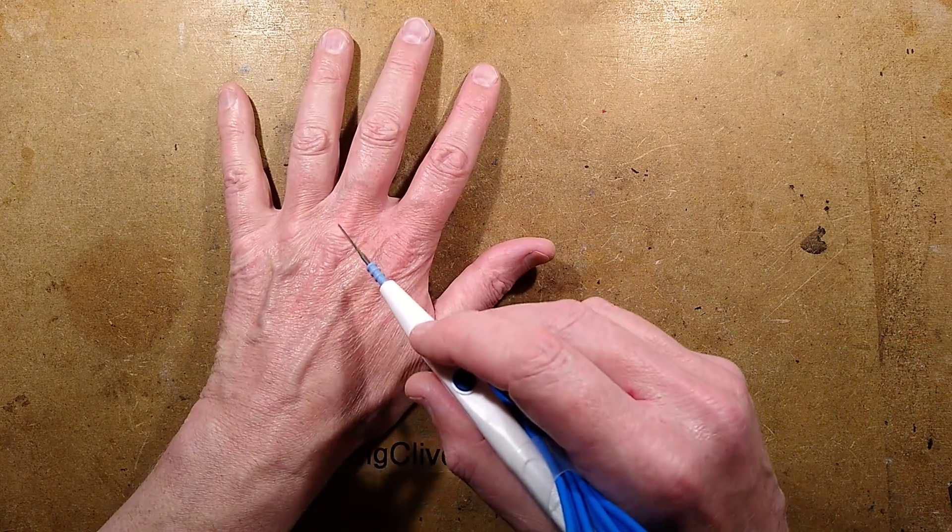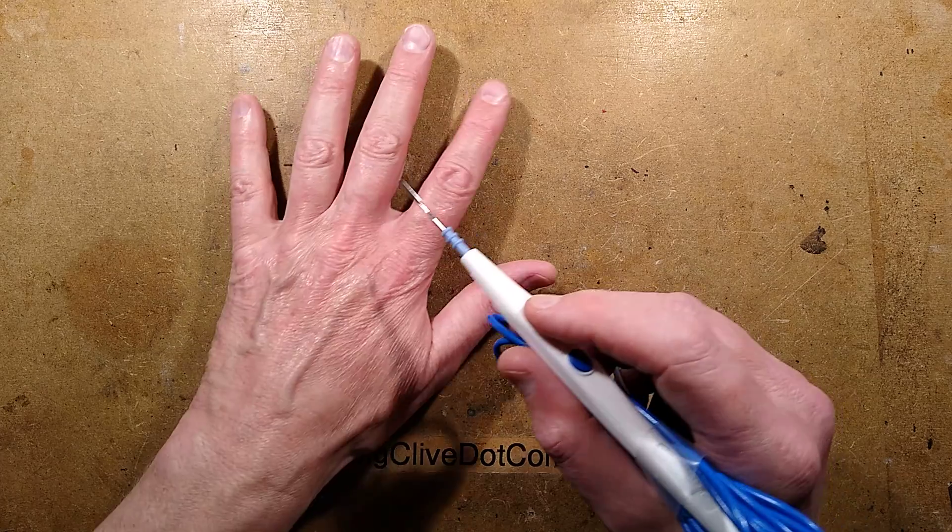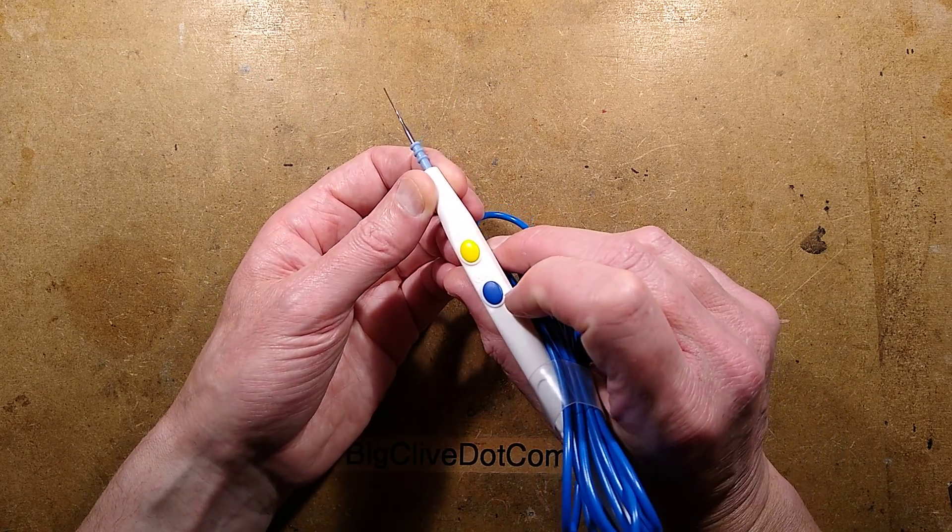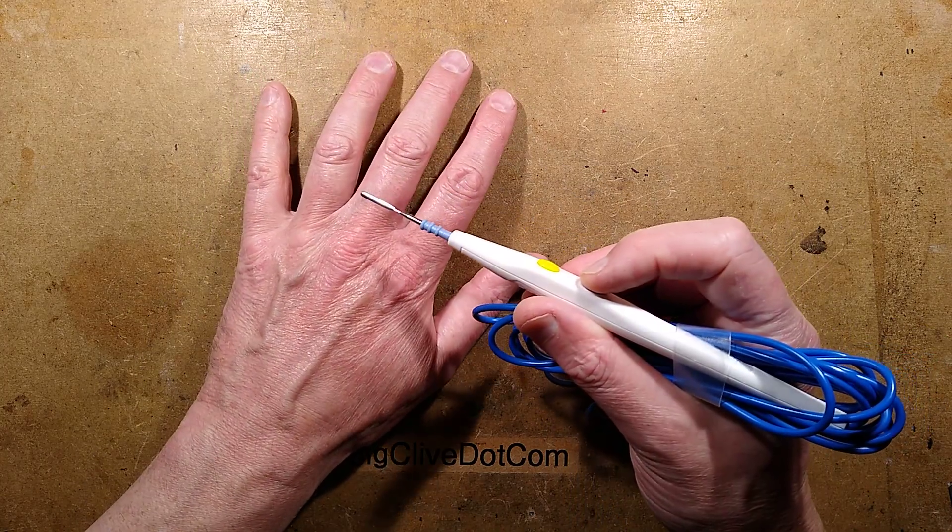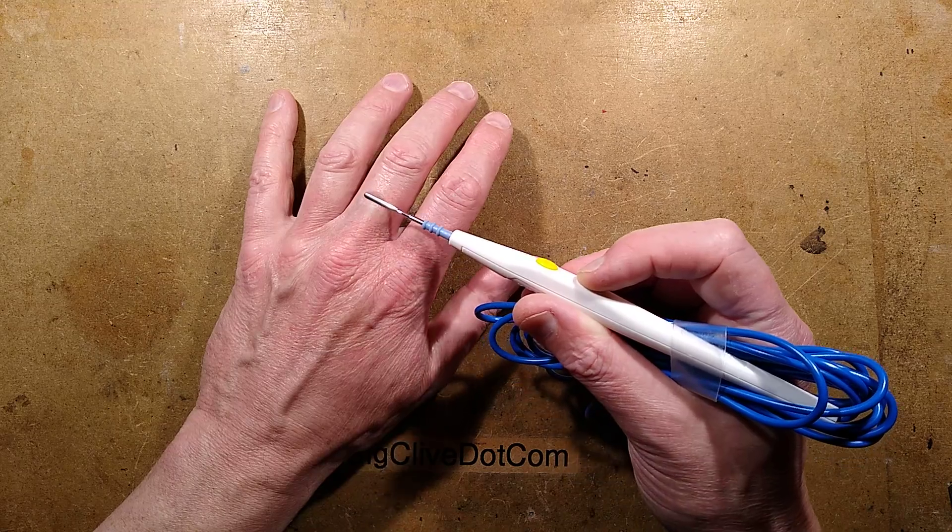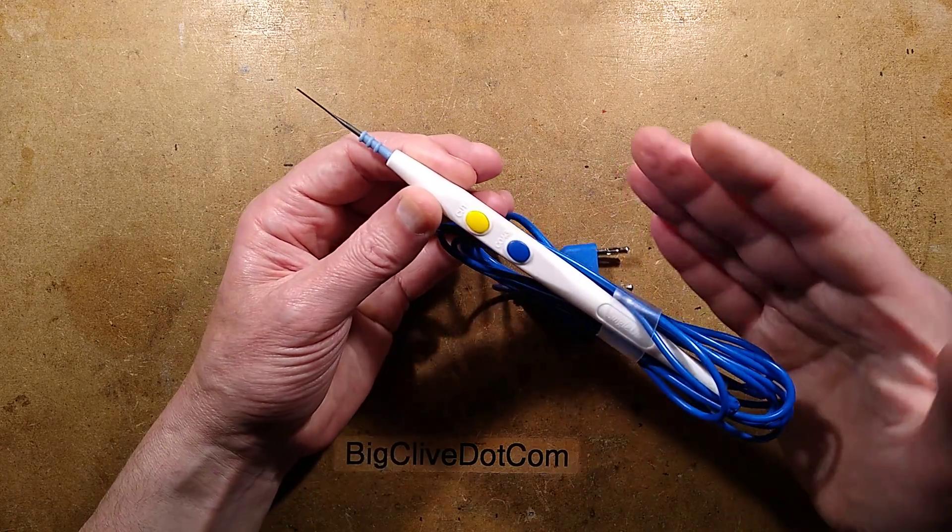The advantage of this over a traditional scalpel is that the scalpel, as soon as you cut it, blood will be flowing everywhere. This effectively cauterizes as it cuts. But you also have another button called coagulate, which can be used to actually stop things bleeding just by running over the surface. It runs at lower power.